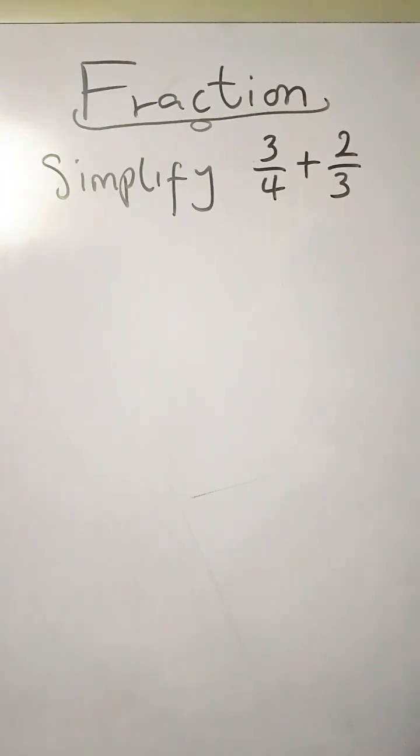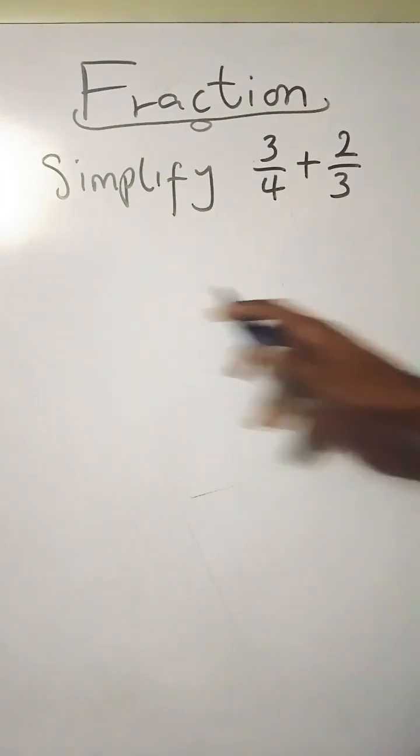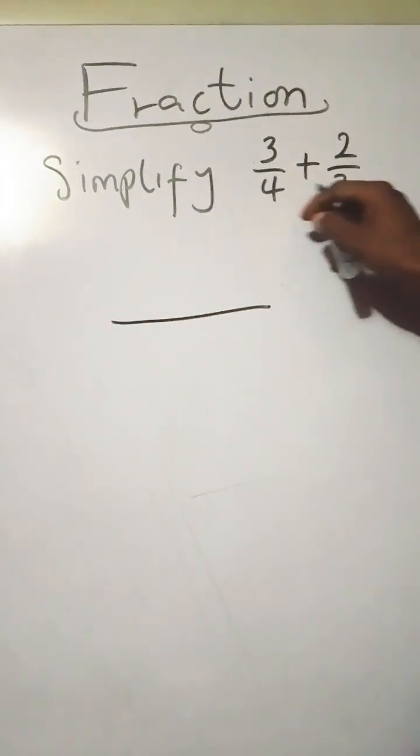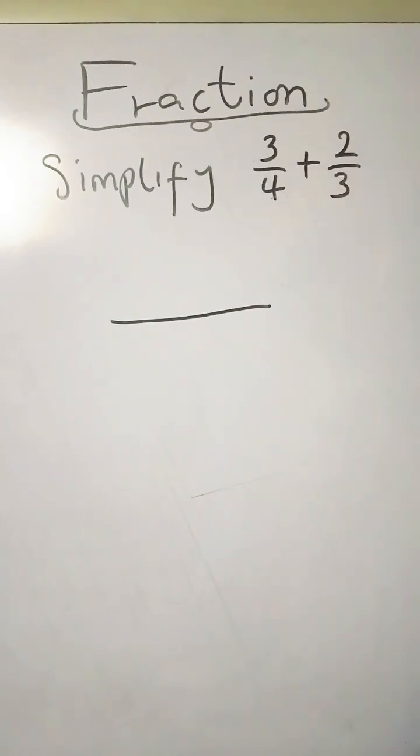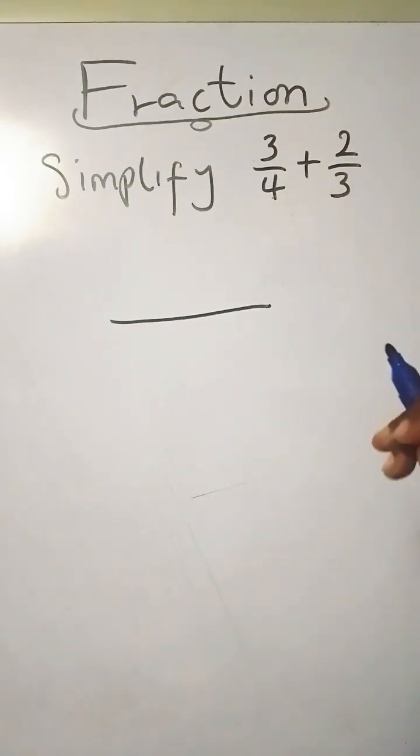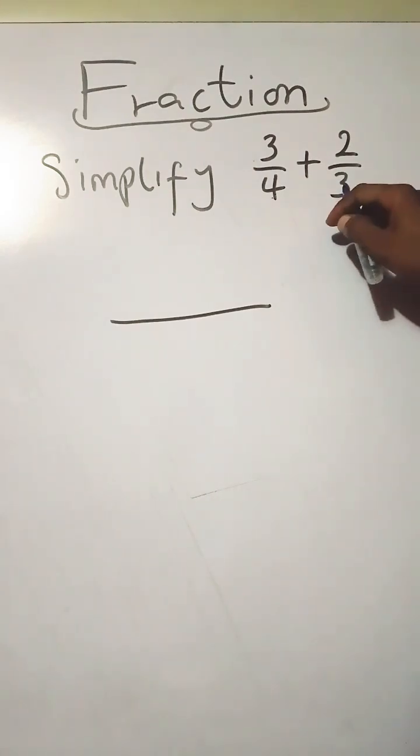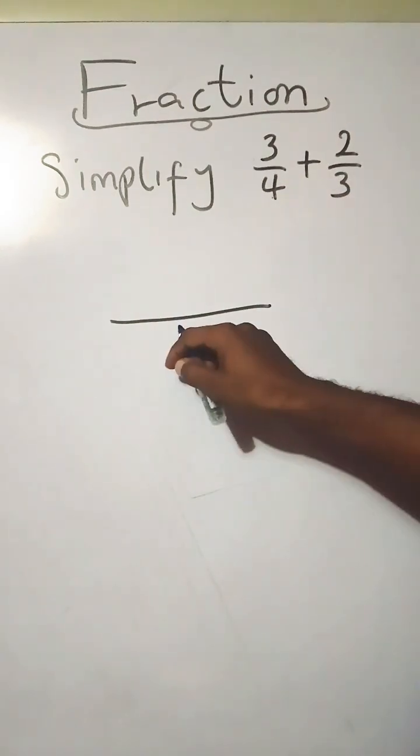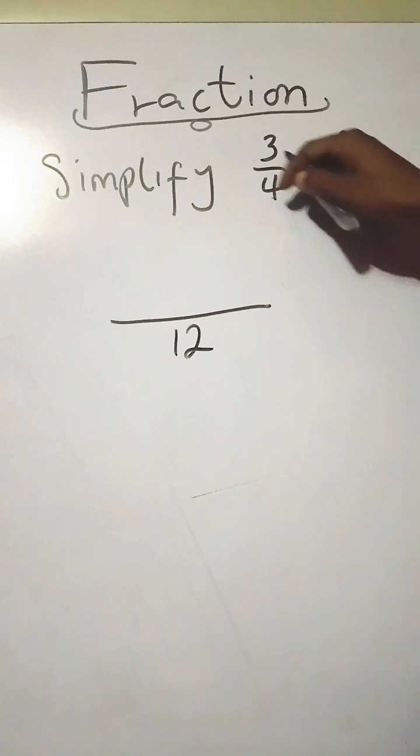You simply apply the butterfly method and here's how it goes. You multiply the denominators since they are co-primes, that means they don't have anything in common. Hence we have 3 times 4 giving us 12.